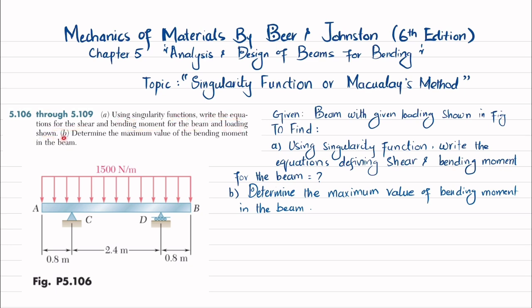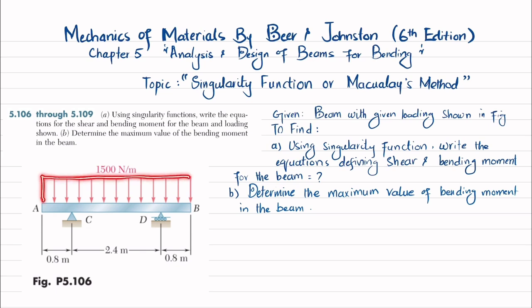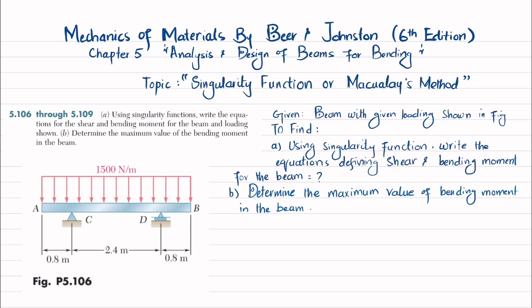In part B, determine the maximum value of bending moment in the beam. You can see this is a simply supported beam having pin support at point C and roller support at point D. There is a uniformly distributed load of 1500 Newton per meter over the entire length of the beam. We have to find the shear force and bending moment equation by using Singularity Function. Let's start with the solution.